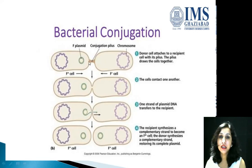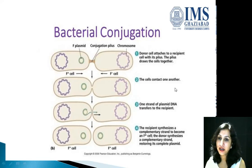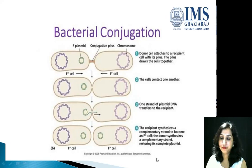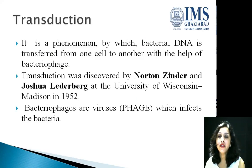In bacterial conjugation, the F-plus cell has an F plasmid and a conjugation pilus. The donor attaches to the recipient via the pilus — a conjugation bridge — which draws the cells together until they are in contact. One strand of plasmid DNA is then transferred to the recipient. The recipient synthesizes a complementary strand to become an F-plus cell, and the donor also synthesizes a complementary strand, restoring its complete plasmid.